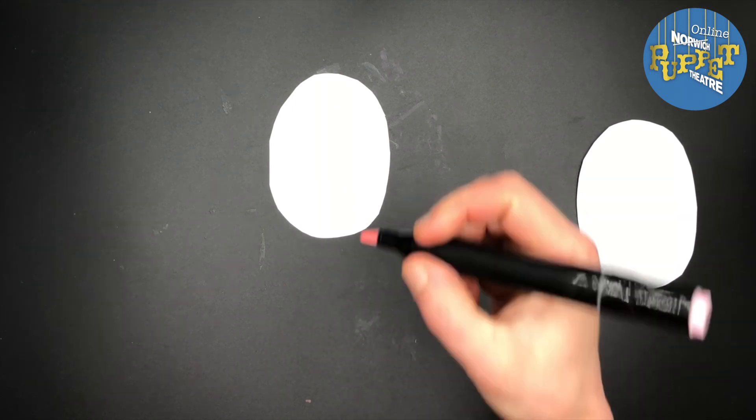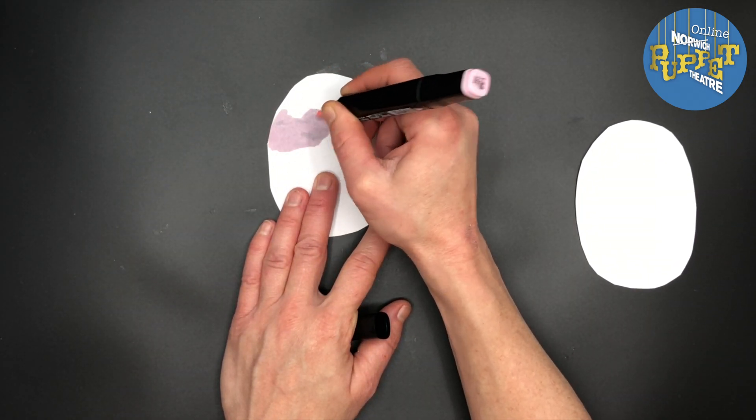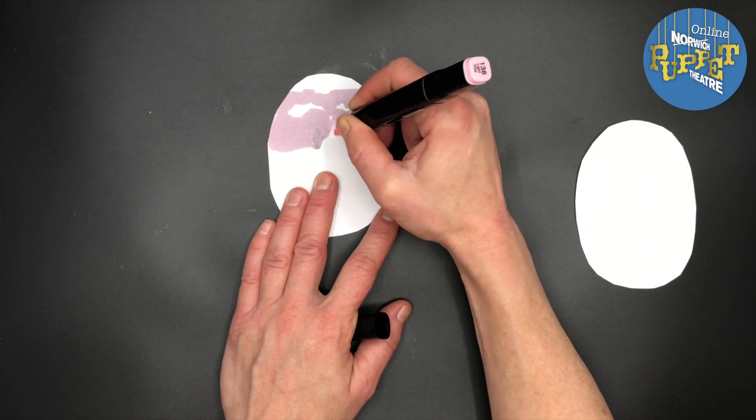On one half of one of your ovals, draw Father Christmas's face. If you're using wrapping paper, it's best to use the plain side.